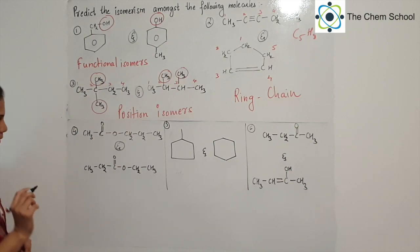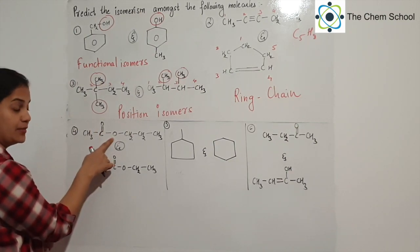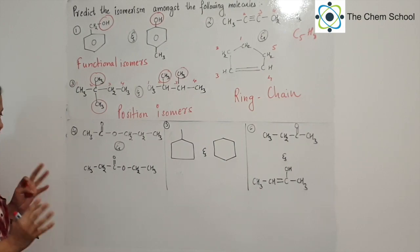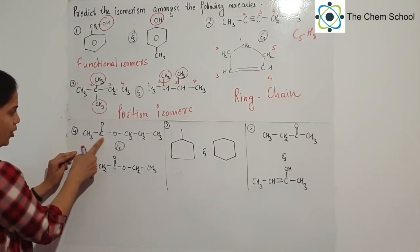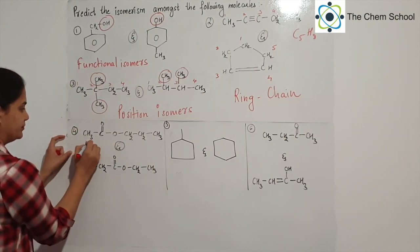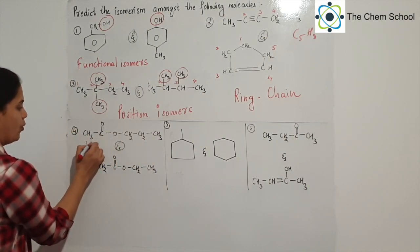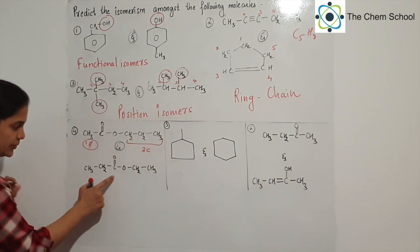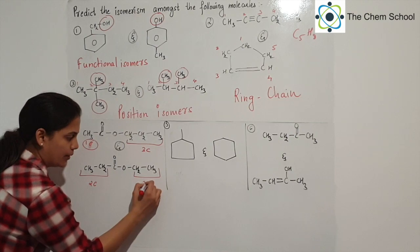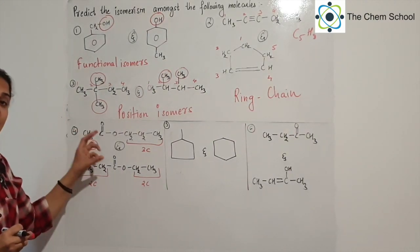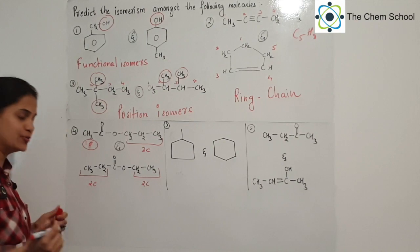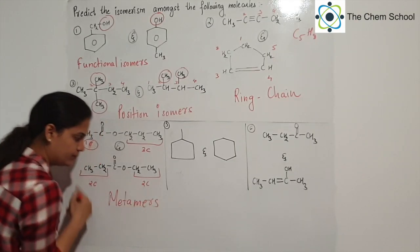For the fourth question, if you look at the functional group — C double bond O — this is an ester. Similarly the next one is also an ester. So both are esters. But check that in the first ester, on one side you have one carbon and on the other side you have three carbons. In the second case, on the left-hand side you have two carbons and on the right-hand side you have two carbons. The functional group is the same but the side chain lengths vary. This type of isomer we call metamers.